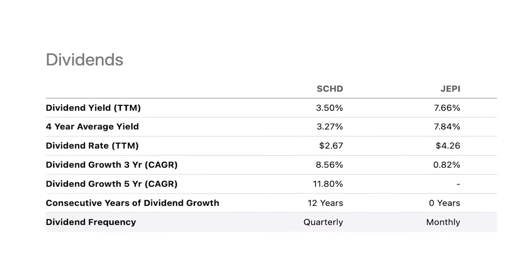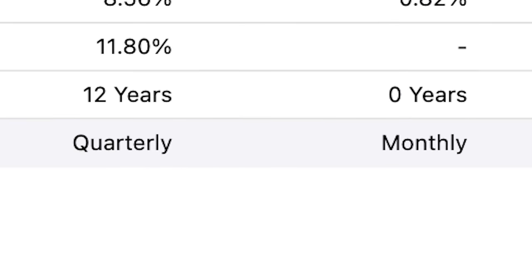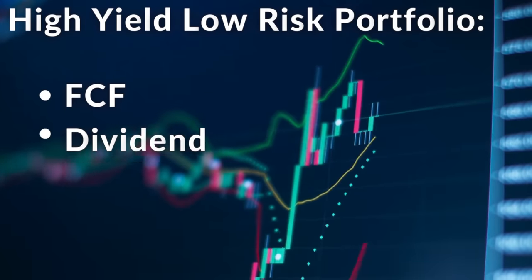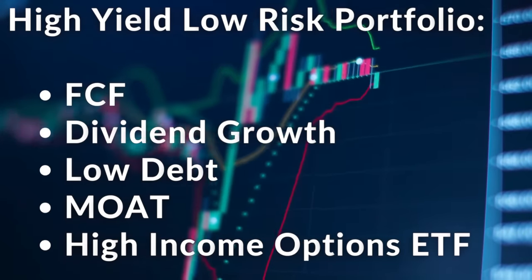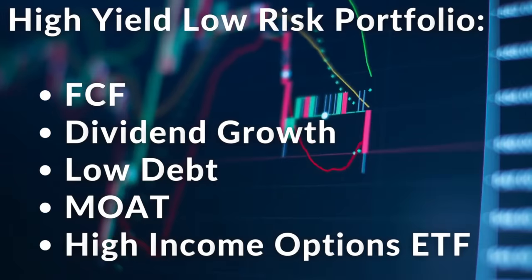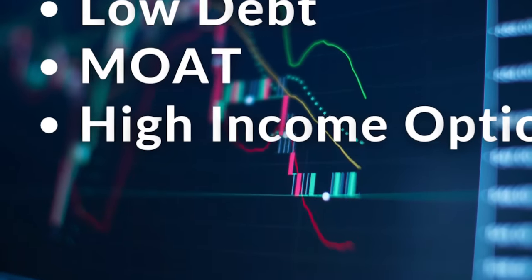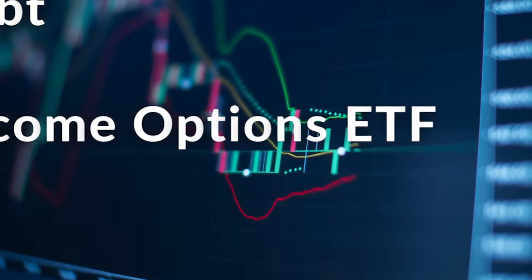These ETFs typically distribute dividends on a monthly basis, which is perfect for consistent reinvesting and dollar-cost averaging. You can use option strategies on your own, but it can be a little bit difficult to manage. However, these ETFs make it a lot simpler, so I do think it is a mistake to exclude these funds from a high-yield portfolio. Instead of having a criteria that focuses on the highest-yielding stocks like SCHD, I would personally prefer to exclude that and instead focus on the first three criteria and then incorporate high-income ETFs that use option strategies.